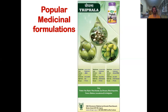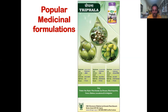Some of the important medicinal formulations include Triphala, which is extensively used in every household. It is made up of three ingredients: Emblica officinalis (Amla), Terminalia bellirica and Terminalia chebula. It is extensively used to cure tridosha, kapha, eye diseases, blood purification, fevers, diabetes, leucoderma and digestion problems.